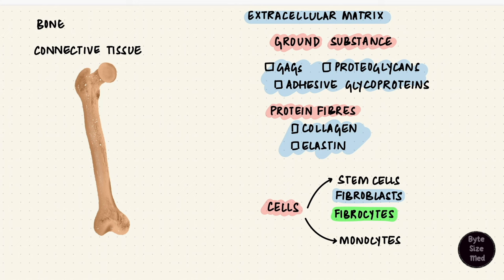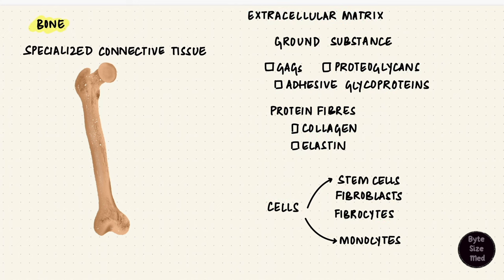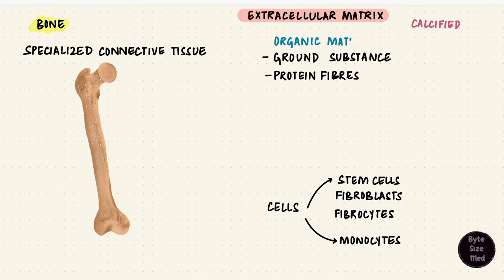Bone is specialized connective tissue. It's supportive. It's special because this extracellular matrix is calcified, meaning it's got these kinds of organic components but also inorganic stuff, predominantly calcium hydroxyapatite.